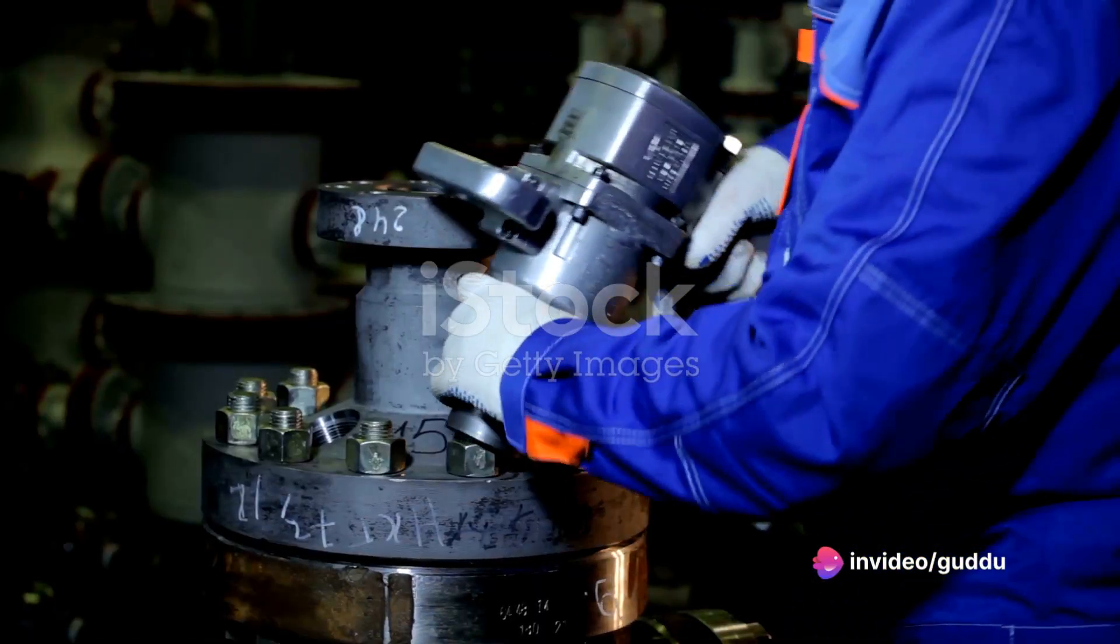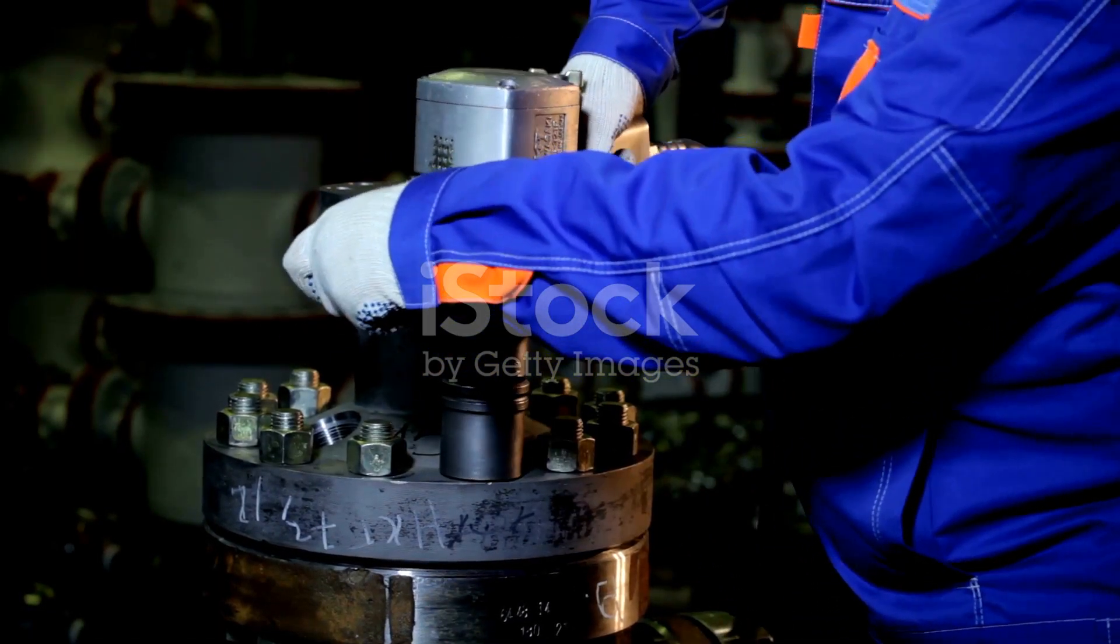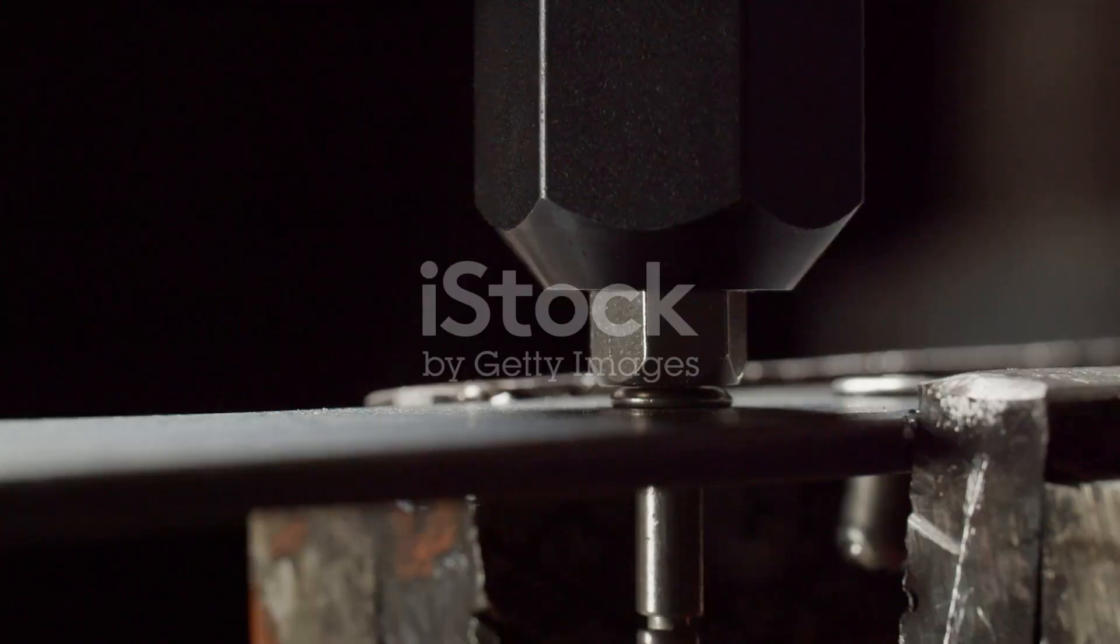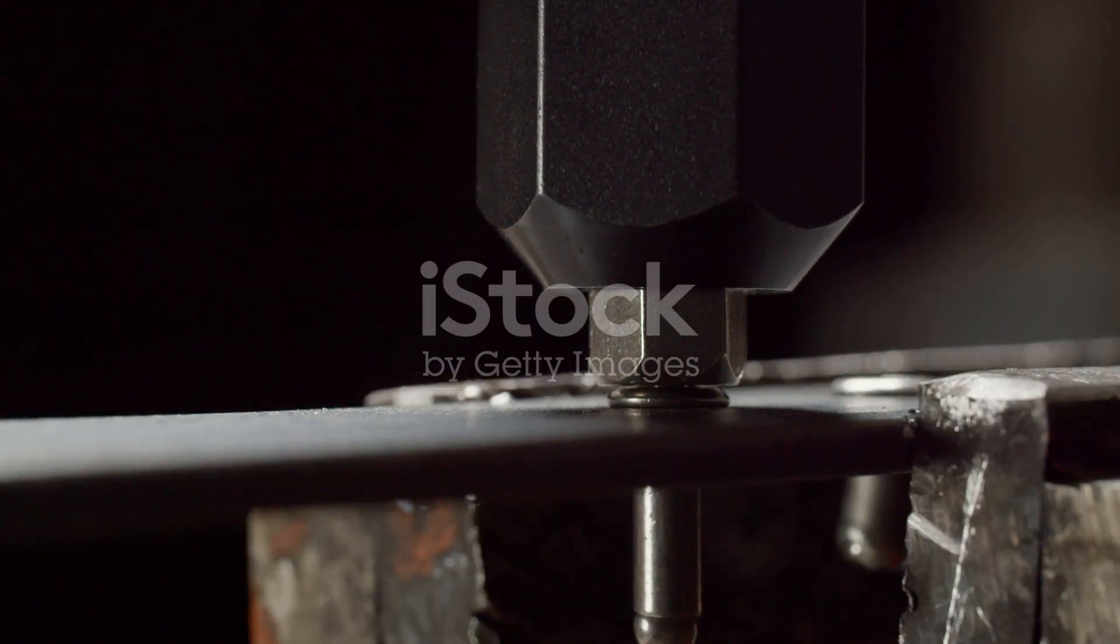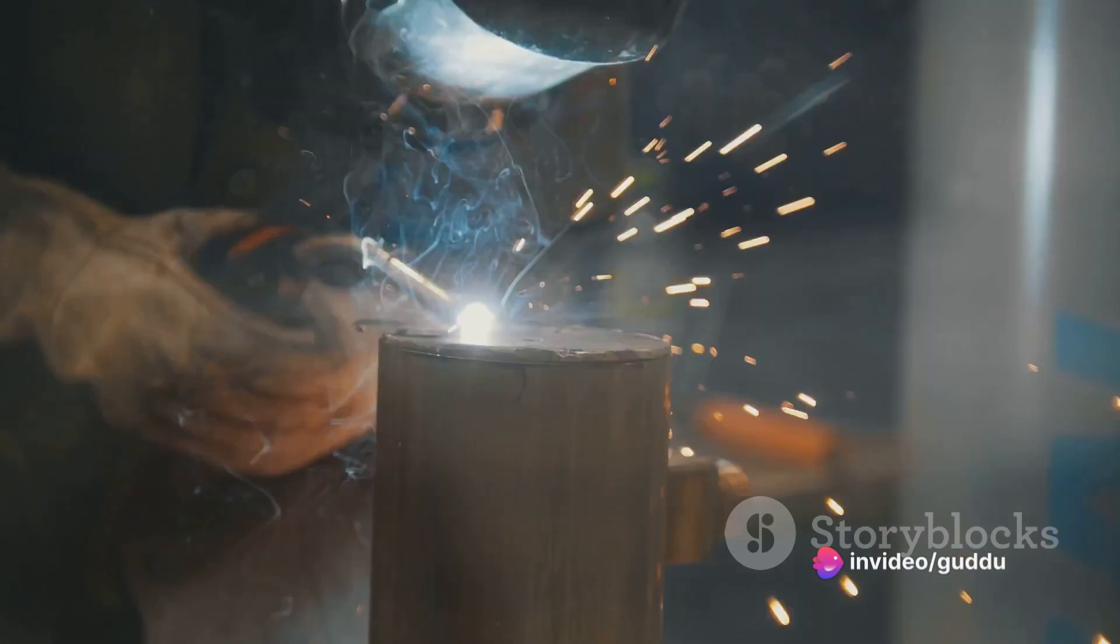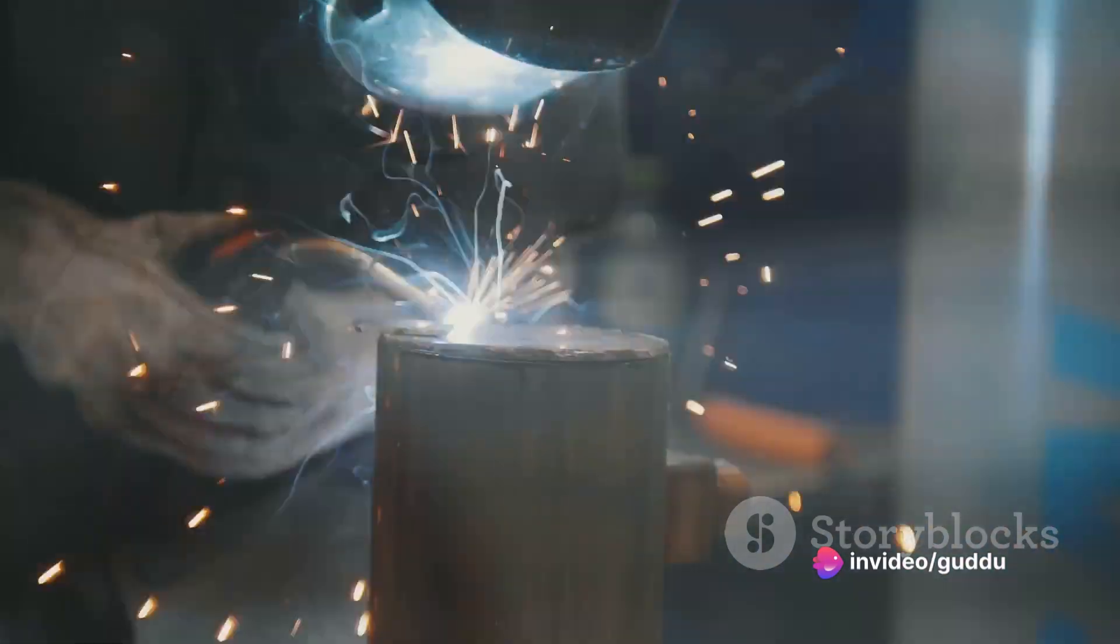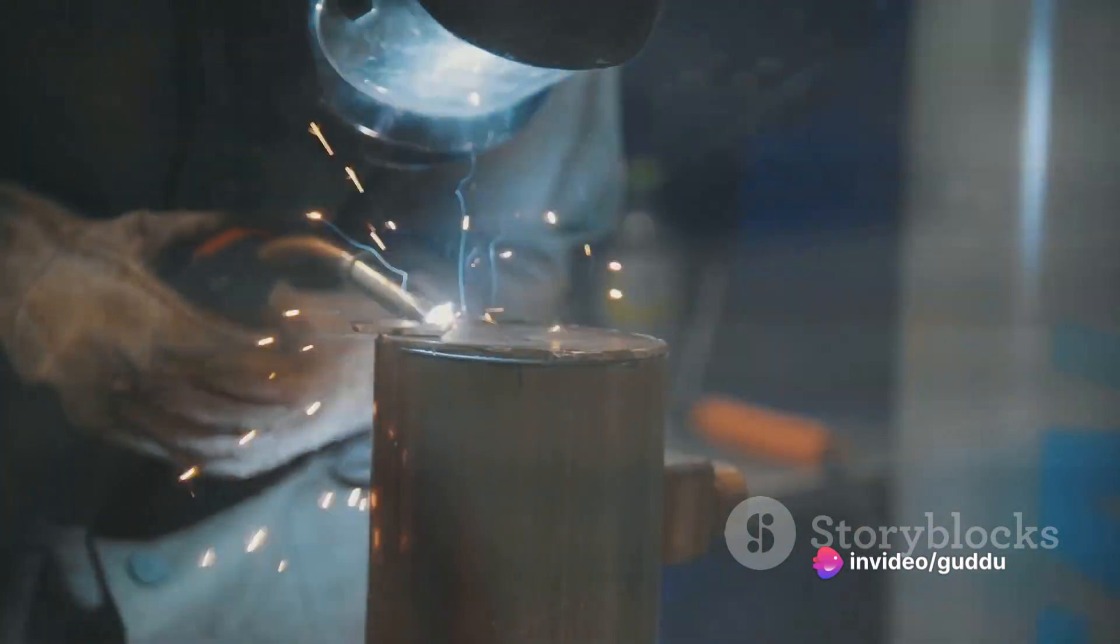Bolted joints are easy to assemble and disassemble but can loosen under vibration. Riveted joints are permanent and strong but require more labor for assembly. Welded joints provide high strength and rigidity but are difficult to disassemble.